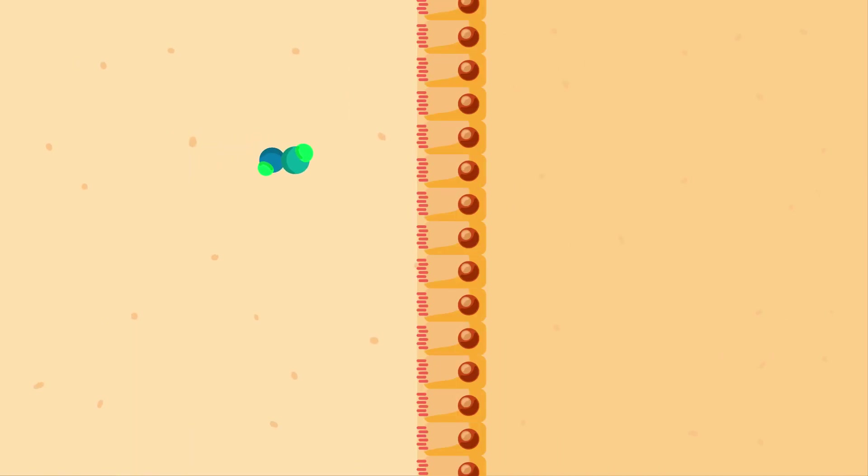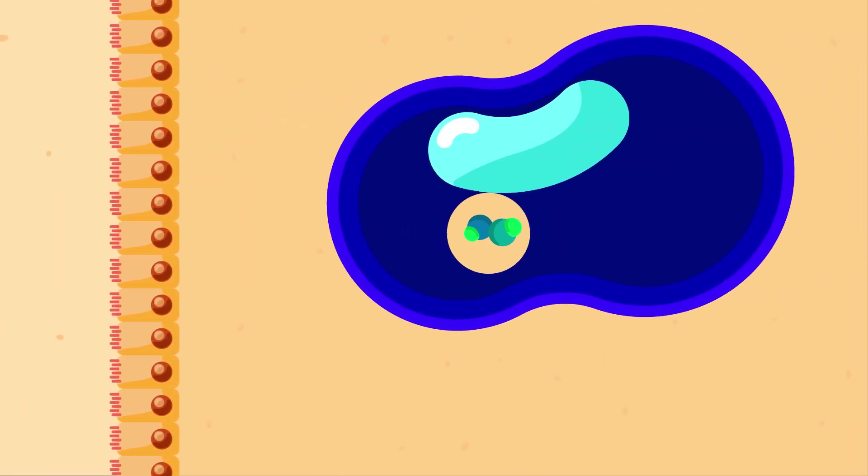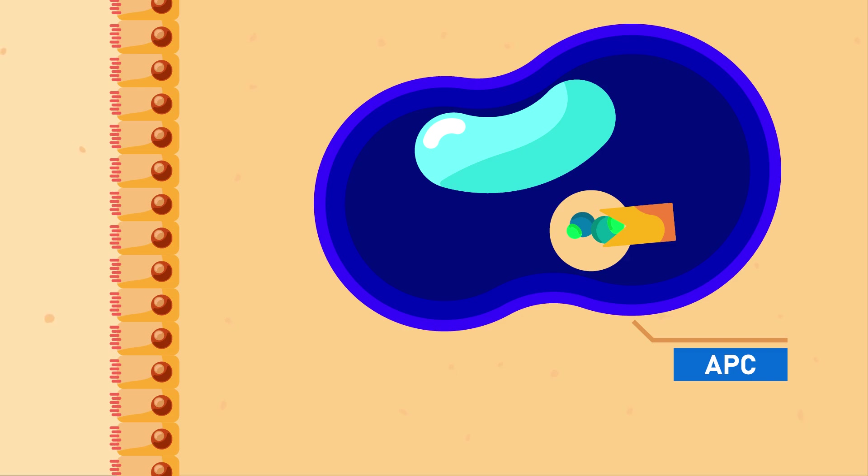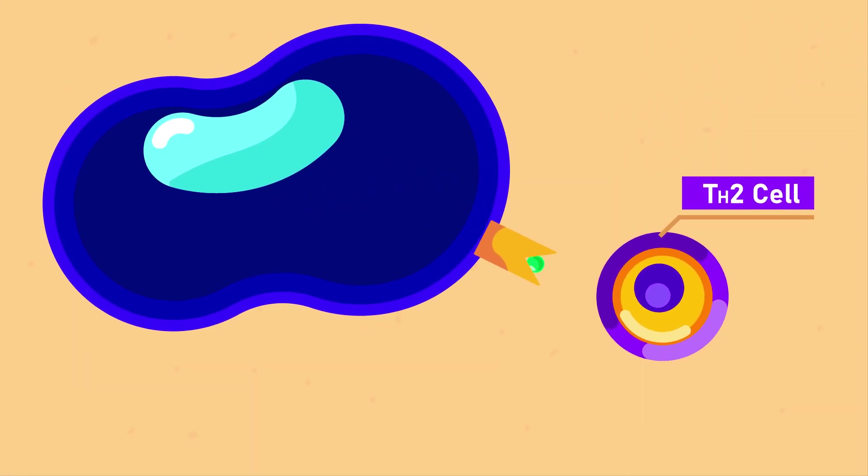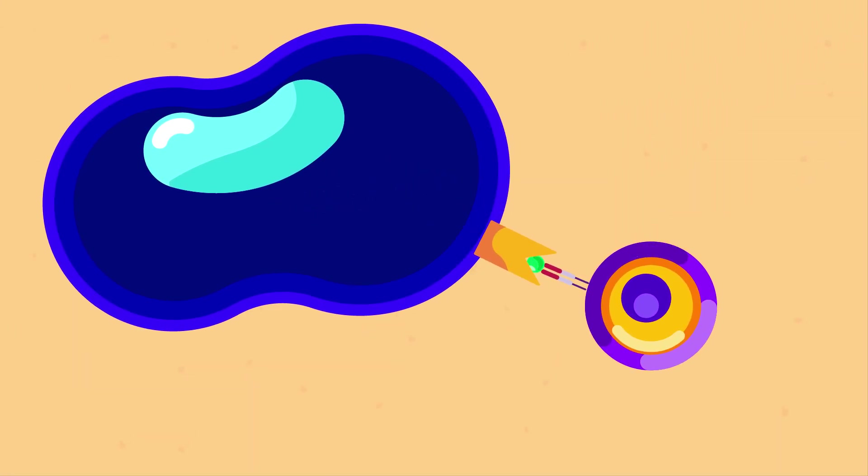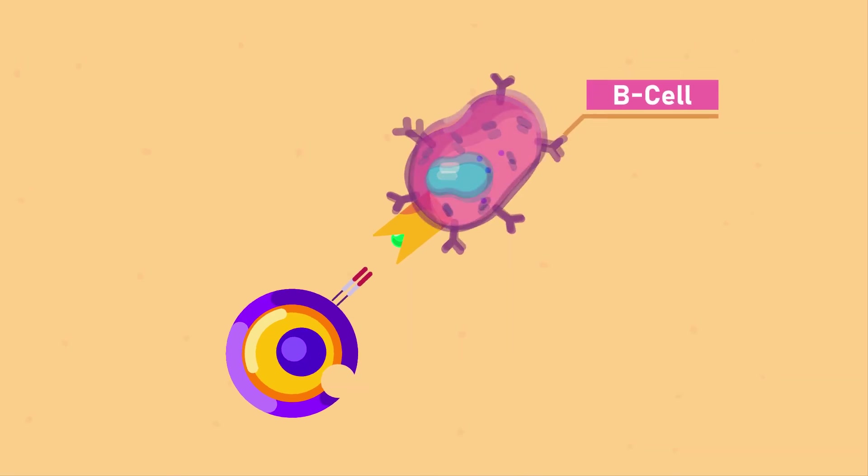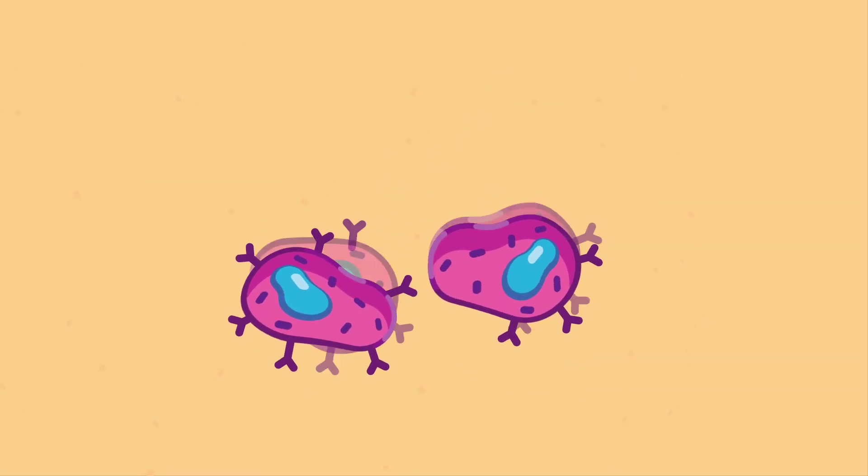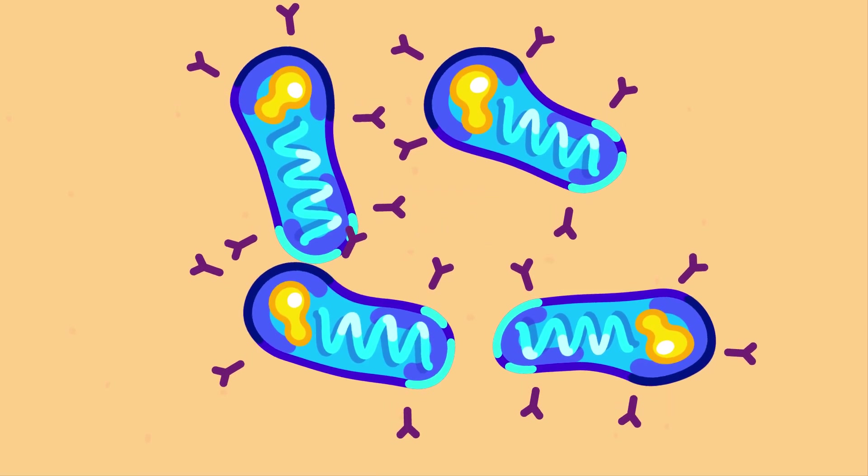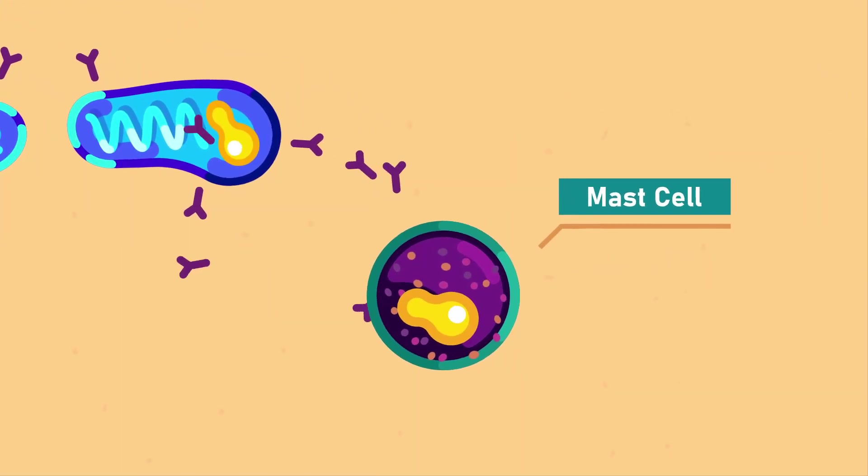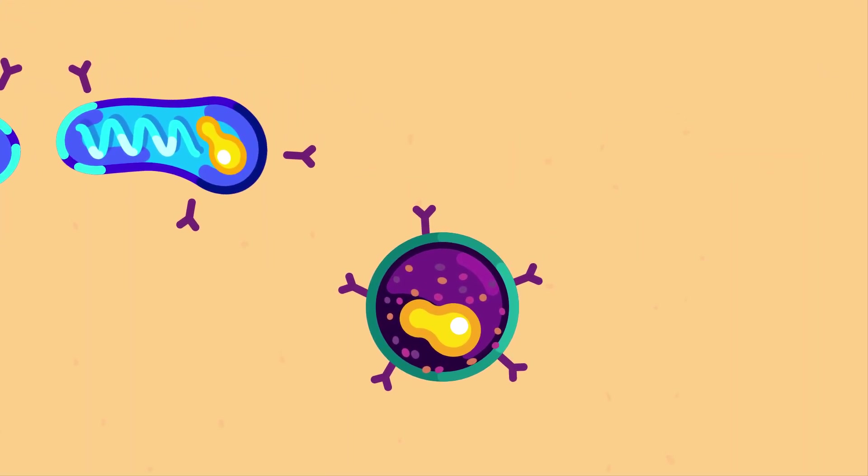During the first exposure to antigen, the antigen is captured by antigen-presenting cells, or APC, and is presented to the Th2 cells. The Th2 cells release interleukin, such as IL-4 and IL-13, that stimulates B cells. The B cells undergo class switching to produce immunoglobulin E. The IgE will attach to the Fc receptor on the mast cells and basophils.